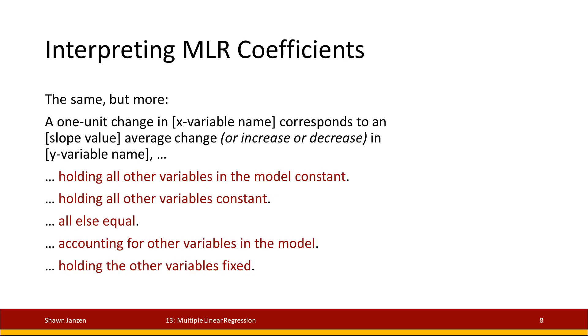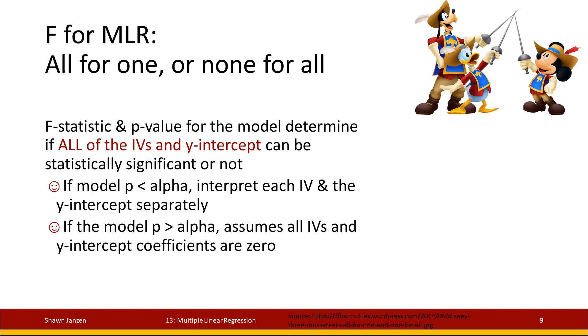Or you could change language: all variables in the model constant, all else equal, accounting for all other variables in the model, holding all other variables fixed. These are all synonyms. They're all equally exchangeable terms that you can use so you don't necessarily sound like a robot all the time saying the same exact thing. But you're cluing your reader in to say, here is the change in coefficient that I'm looking at, here's the impact it's causing, given my understanding of all of these extra variables that happen to be in my model.